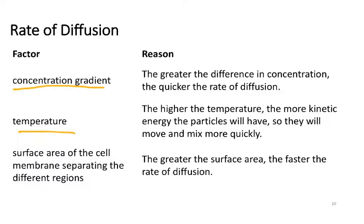Another factor is temperature. The higher the temperature — remember, temperature is a measurement of how fast particles are moving, also described as kinetic energy — the faster diffusion and mixing will occur. Finally, when we're talking about living systems, the more cell membrane you have separating two areas, the more surface area you have for diffusion to occur across, and that's going to cause the rate to be faster. We'll see when we start to talk about the digestive system that a number of organs in the body are structured to increase surface area of the cells to increase diffusion.